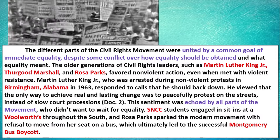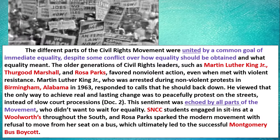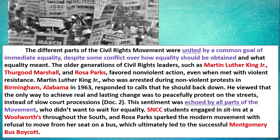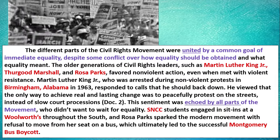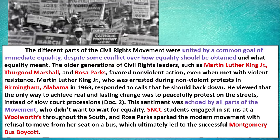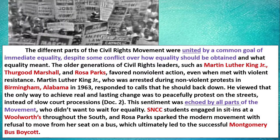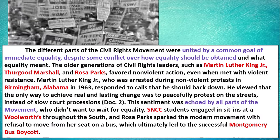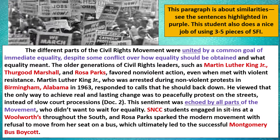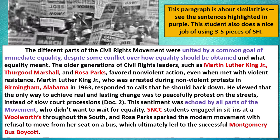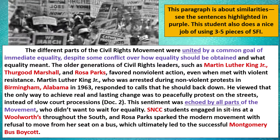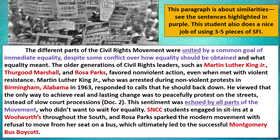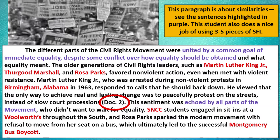Moving on to body paragraph number one. What we're looking for in red are your key terms or your pieces of SFI — specific factual information. Whether you're writing a DBQ or an LEQ, always think about using three to five key terms per paragraph. This person does a nice job of that. Also, when you look at doc number two, you can see how they've cited a document. This person's been given seven documents, and they're citing document two at the end of the sentence. This particular paragraph is about similarities, and you can see the sentences highlighted in purple talking about how both movements echoed across all parts of the movement.